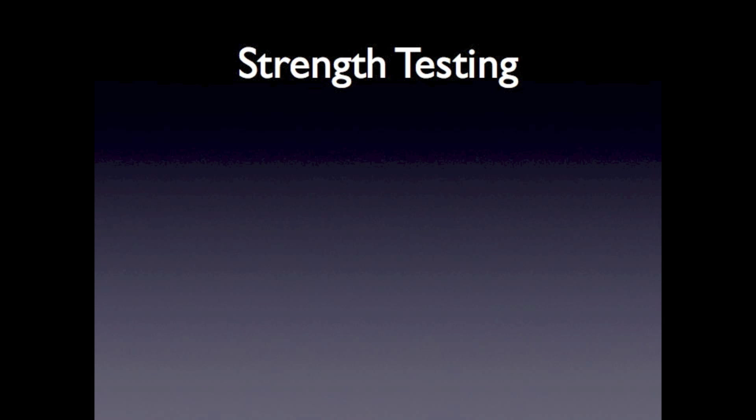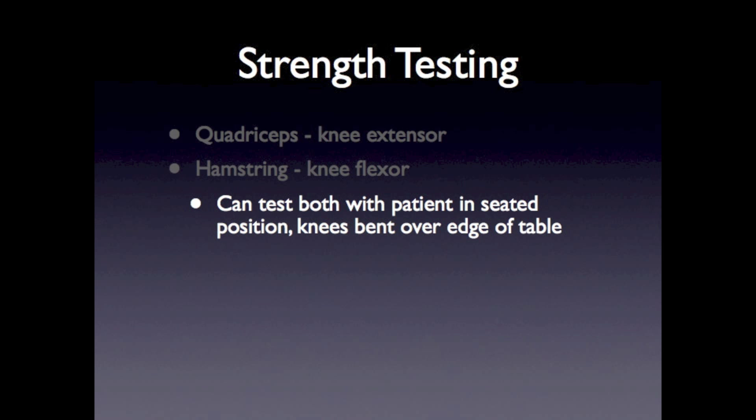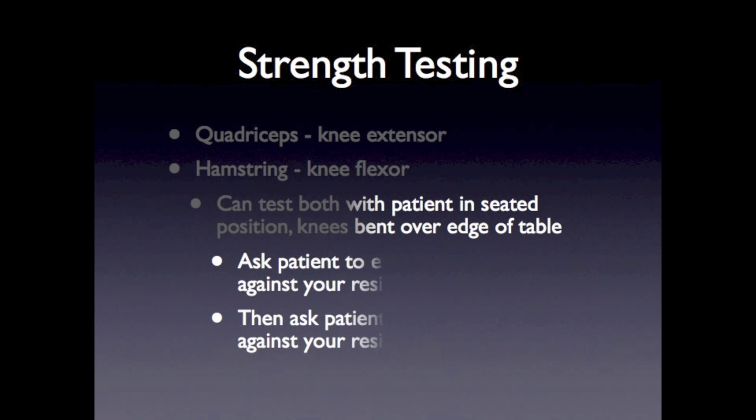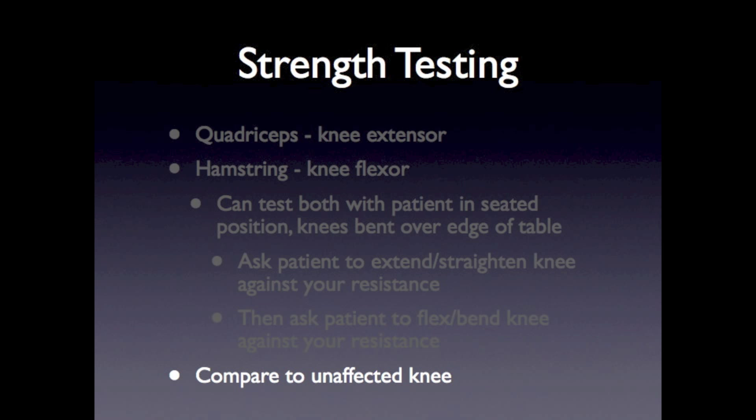To measure knee strength we will test the quadriceps and hamstring muscles. Have the patient sit over the edge of the table with their knees bent at 90 degrees. Ask the patient to extend or straighten the knee against your resistance. Then ask the patient to flex or bend the knee against your resistance. Compare to the unaffected knee.